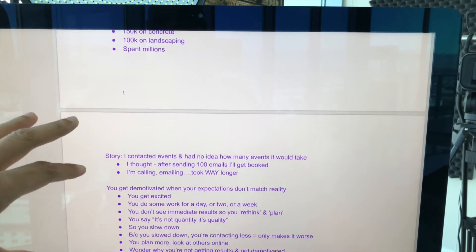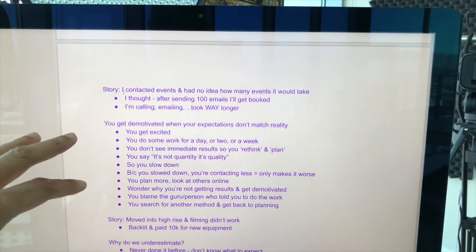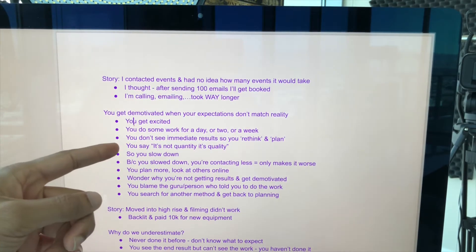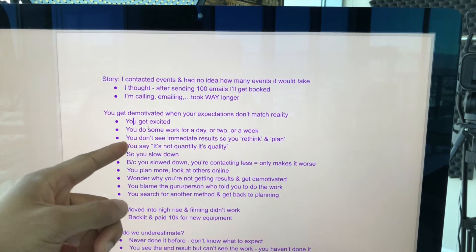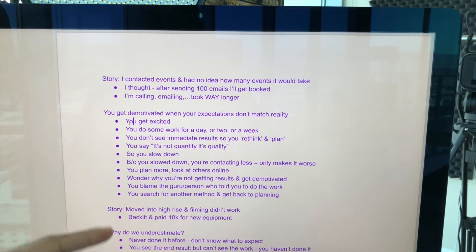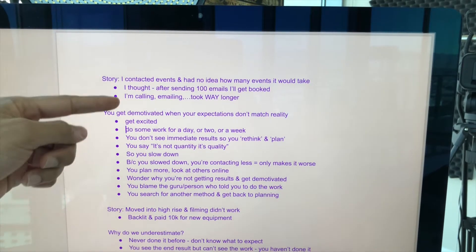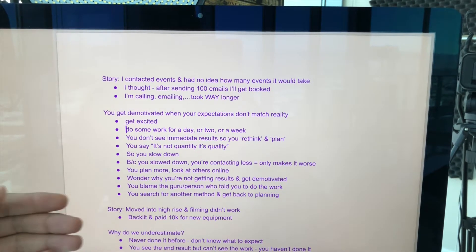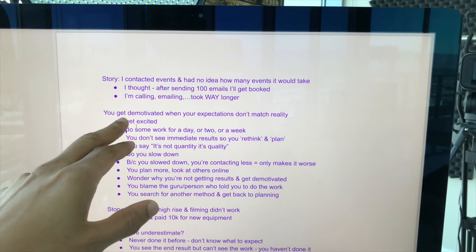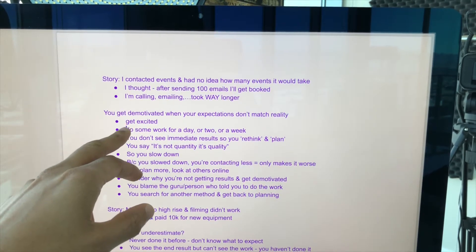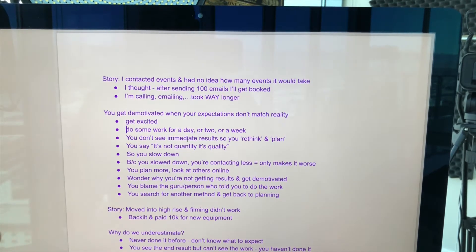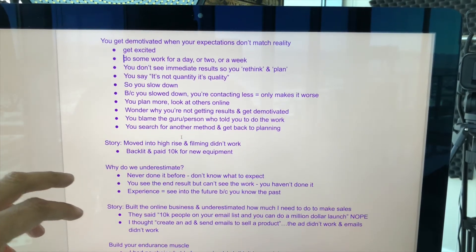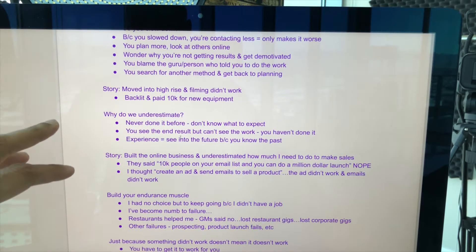Once I have what I'm going to talk about, I start to think: how can I delete words? So like here where it says 'you get excited, you do some work for the day' — I write all this down, but I'm going to delete the word 'you' and all that, because I don't need that to remind me to use the word 'you' as I speak. I just want to glance and see 'get excited' — bam, I now know what to say. I see 'do some work for the day' — bam, I just glance and I can start talking.